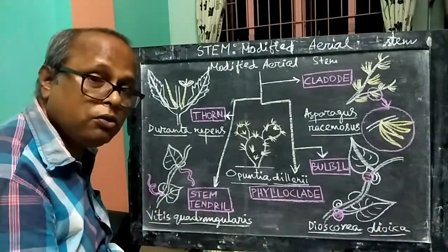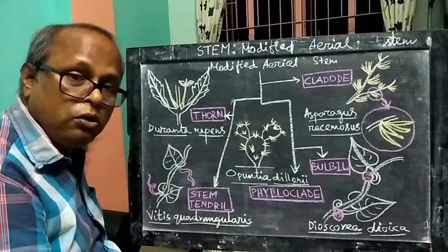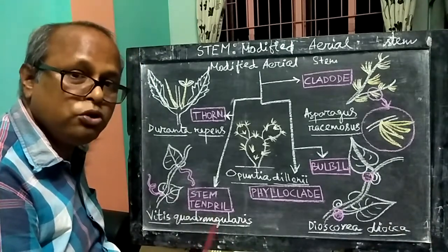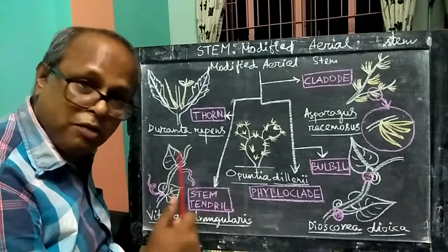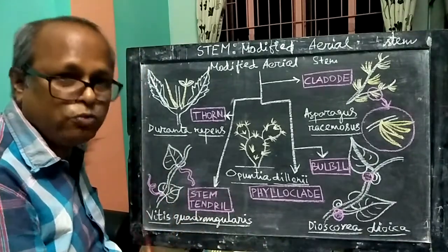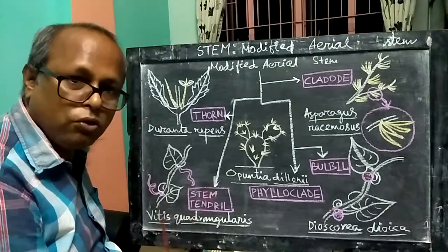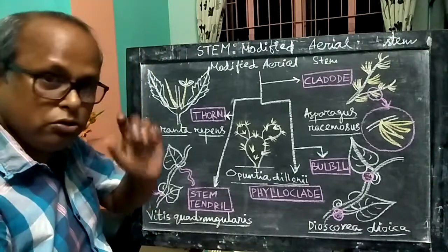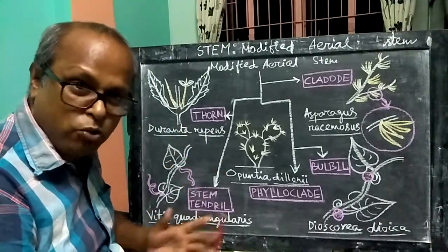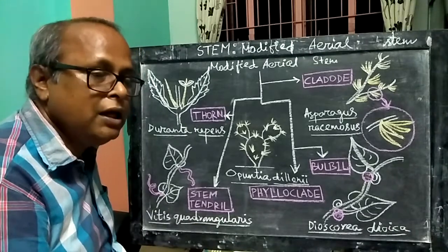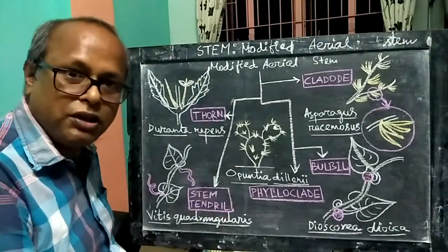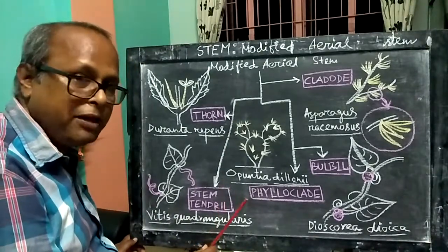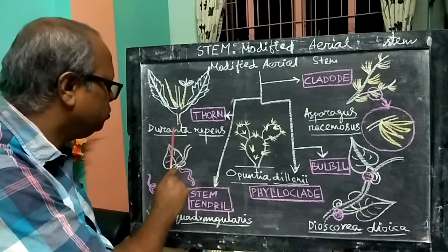The thorn is a very important modification. The thorn is a modified stem — you have to look at this carefully. The cow cannot eat it. So we have to look at this example.